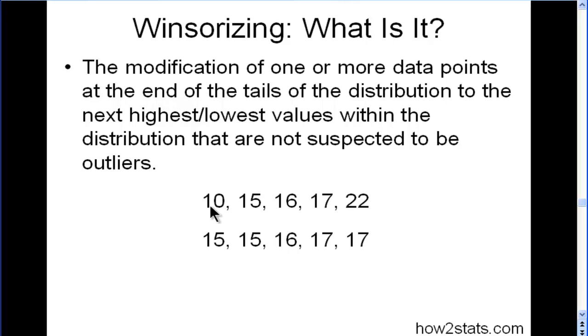Simply re-modify the value of 10 to 15 because that's the next lowest value in the tail on the left side of the distribution. And on this side here where we've got 17 and 22, the 22 now becomes 17 because that's the next highest value.